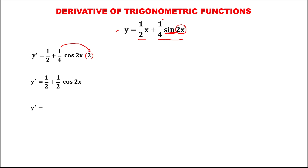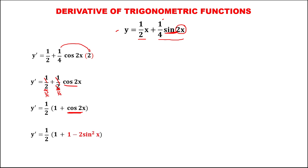Then we have a common term — one-half and one-half — so put this one-half outside and divide every term by one-half. One-half divided by one-half is one, then plus one-half divided by one-half is one, so we have cosine two x. Then to simplify, using the trigonometric double-angle identity for cosine two x, since cosine two x equals one minus two sine squared x.